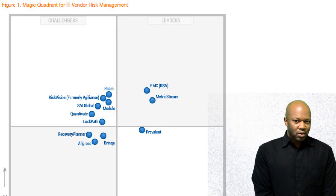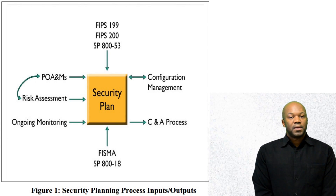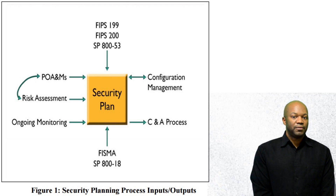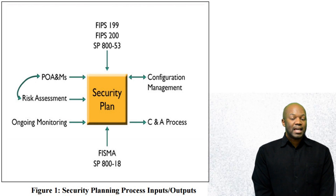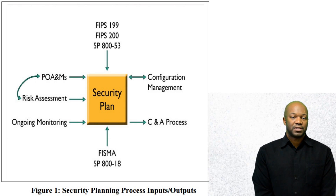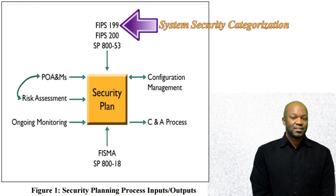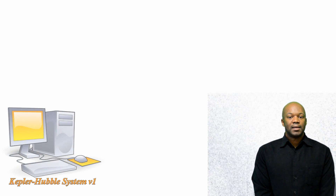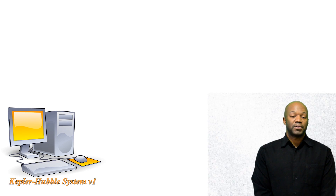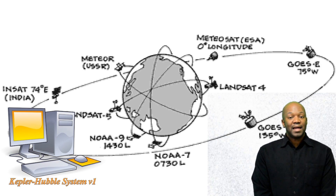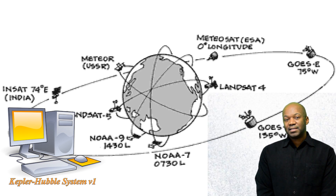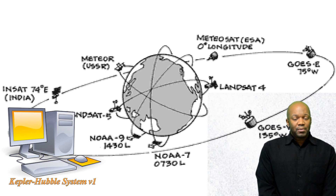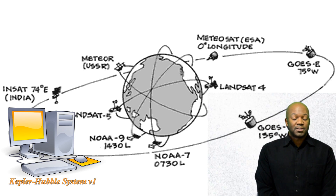So what are the elements that go into a system security plan? The primary elements include compliance with FIPS 199, meaning the system is named, categorized, and assigned a security impact level. In our example, we'll have a Kepler-Hubble system. What it does is track the satellite movements of both Kepler and Hubble, gather data from both of these, and compare that data against electromagnetic information from the Earth. We have to document this system in an SSP, a system security plan.